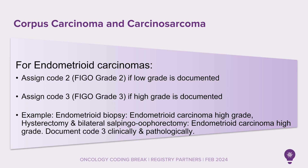Next, we have corpus carcinoma and carcinosarcoma updates. For endometrioid carcinomas, we can assign code 2, FIGO grade 2, if low grade is documented, and assign code 3, FIGO grade 3, if high grade is documented. An example has an endometrioid carcinoma biopsy that shows endometrioid carcinoma high grade, and a hysterectomy and bilateral salpingo-oophorectomy which also shows endometrioid carcinoma high grade. So we will document code 3 clinically and pathologically.